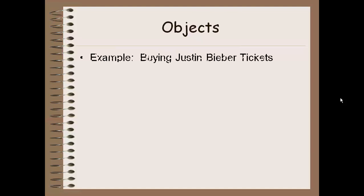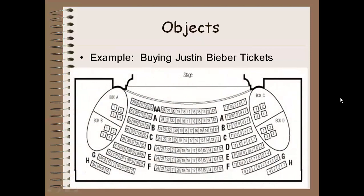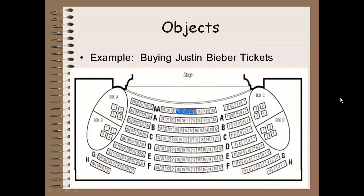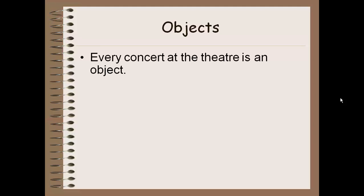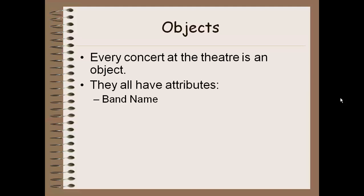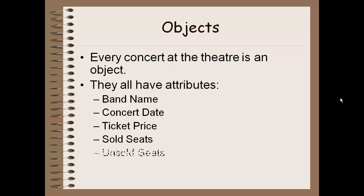Let's take a look at an example. I want to do a program where I can buy some Justin Bieber tickets. Here's my auditorium, and I want those front row seats. To make this program, I'm going to have a concert object. What might some of my attributes be for that concert object? Well, I have a band name, the date of that particular concert, a ticket price, which seats are sold, which seats are still unsold, etc. These are all attributes — something about that concert that I know.